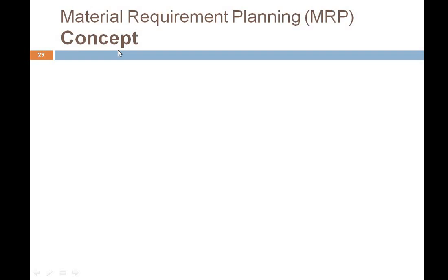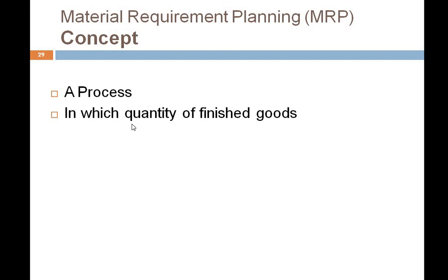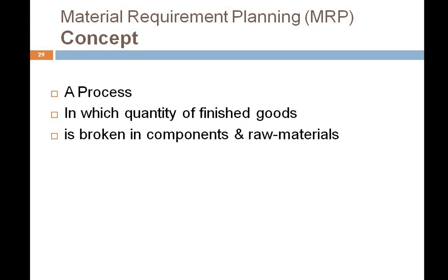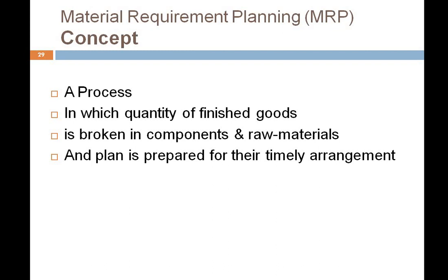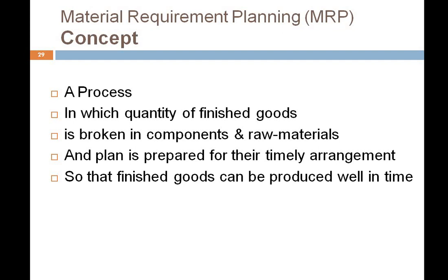MRP is a process in which the quantity of finished goods is broken into components, sub-components, assemblies, sub-assemblies, and finally raw materials, and a plan is prepared for their timely arrangement. Basically two questions are answered: first, how much quantity of components, sub-components, assemblies, sub-assemblies, and raw material is required; and second, when they need to be arranged so that finished goods can be produced well in time.